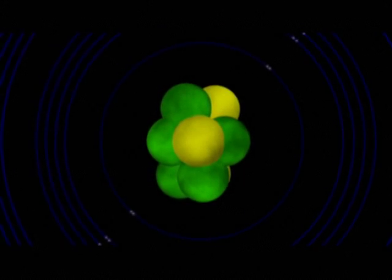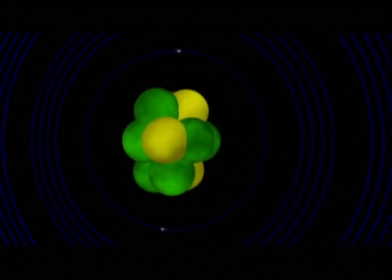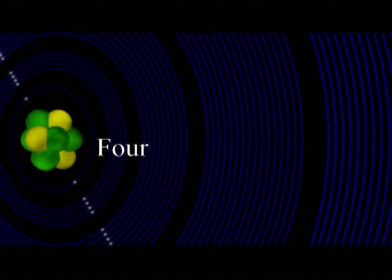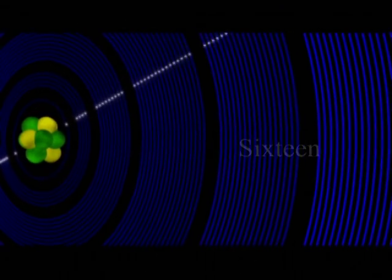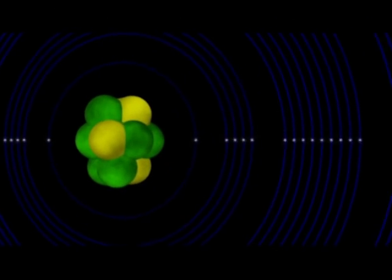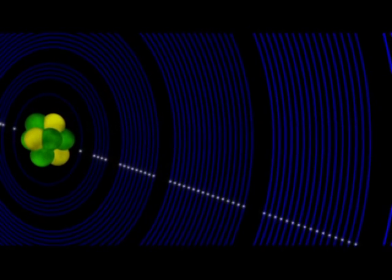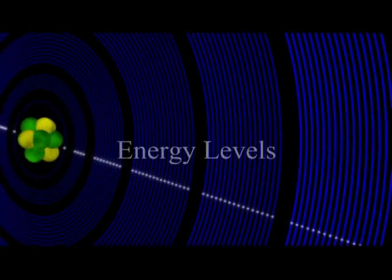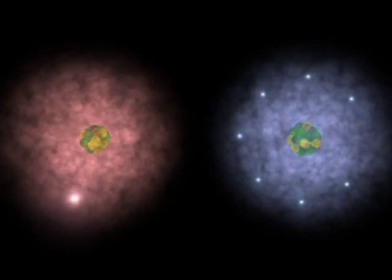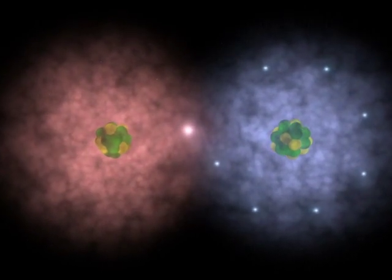Orbitals extend out from the nucleus at increasing defined distances to form what are called electron shells. The electron shell closest to the nucleus has only one orbital; the second one has four orbitals; the third, nine; while the fourth, fifth, and sixth electron shells have 16 orbitals. The seventh and final electron shell has only one orbital. The amount of energy an electron has depends on which electron shell it is in. Electrons in the shell closest to the nucleus have the least energy, while those in the shells furthest from the nucleus have the most energy. Because an electron's energy level can be judged by the electron shell it occupies, electron shells are often referred to as energy levels. It is the interactions occurring between the outer energy levels of atoms that create ions and molecules.